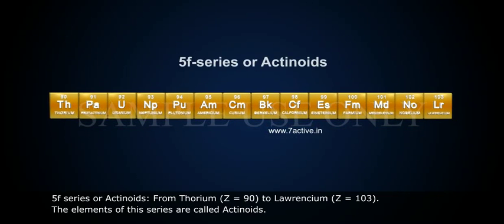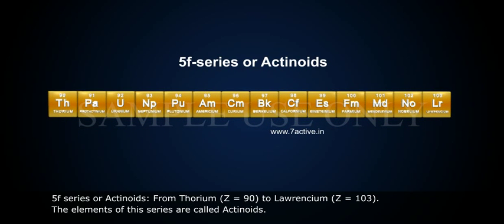5f series or Actinides. From Thorium (Z = 90) to Lawrencium (Z = 103). The elements of this series are called actinides.